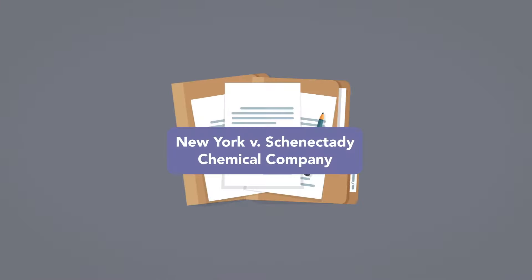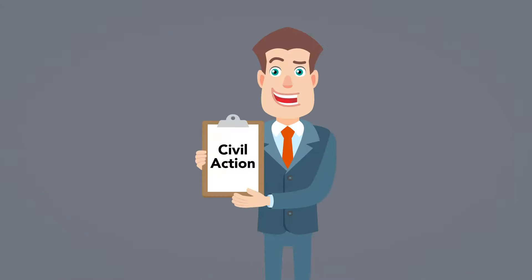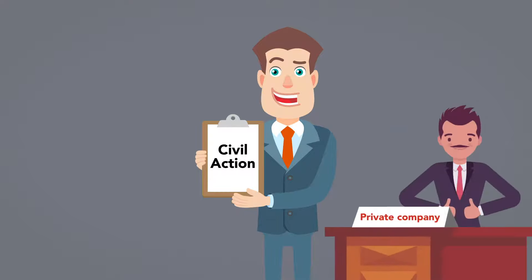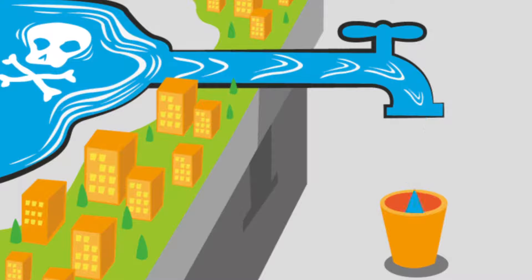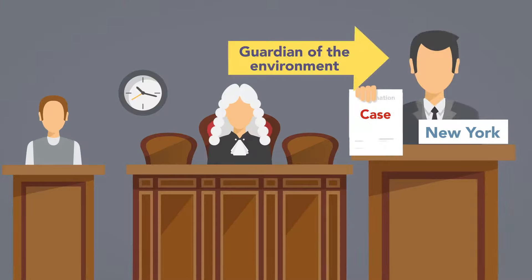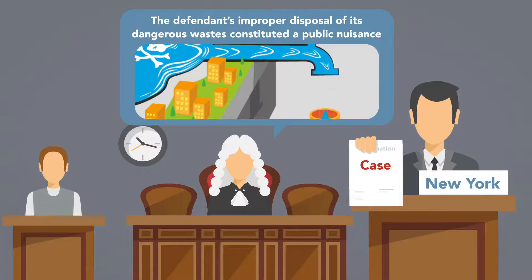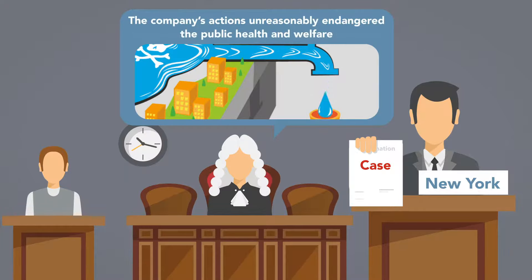New York v. Schenectady Chemical Company applied public nuisance theories to create liability for pollution. There, the state brought a civil action for public nuisance against a private company that hired an independent contractor who dumped polluting chemicals into groundwater resources. New York pursued the case in its role as guardian of the environment. The court found that the defendant's improper disposal of its dangerous wastes constituted a public nuisance, as the company's actions unreasonably endangered the public health and welfare.